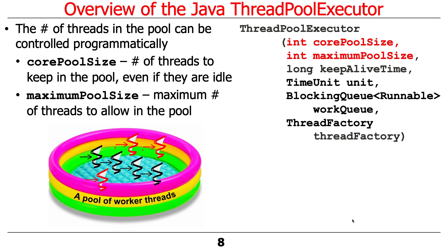The first two parameters passed to the thread pool executor control the size of the pool of threads. One is called core pool size — this is the number of threads to keep in the pool even if nobody's using them at the moment, so it's the default number that are always there. And then there's maximum pool size, which is the maximum number of threads that the pool can grow to as new threads are added.